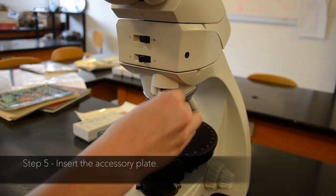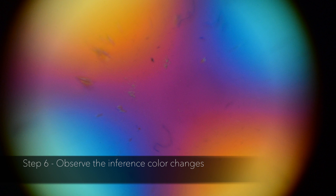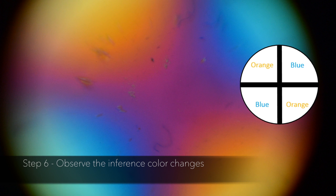Step 5: Insert the accessory plate. Step 6: Observe the interference color changes. Here the northeast and southwest quadrants went from white to blue when we inserted the accessory plate, and the northwest and southeast quadrants went from white to orange.